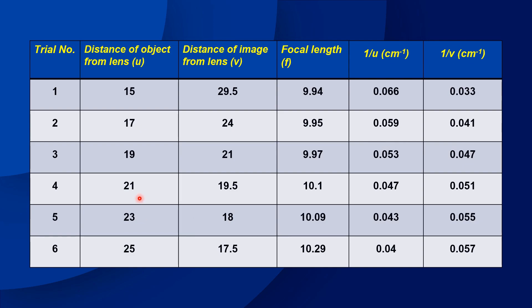1 by V is 0.047. Then U is 21 cm, V is 19.5. F is equal to UV divided by U plus V, giving a reading of 10.1. Then 1 by U is 0.047 and 1 by V is 0.051. Next: U is 23, V is 18, F is 10.09. 1 by U is 0.043, 1 by V is 0.055.